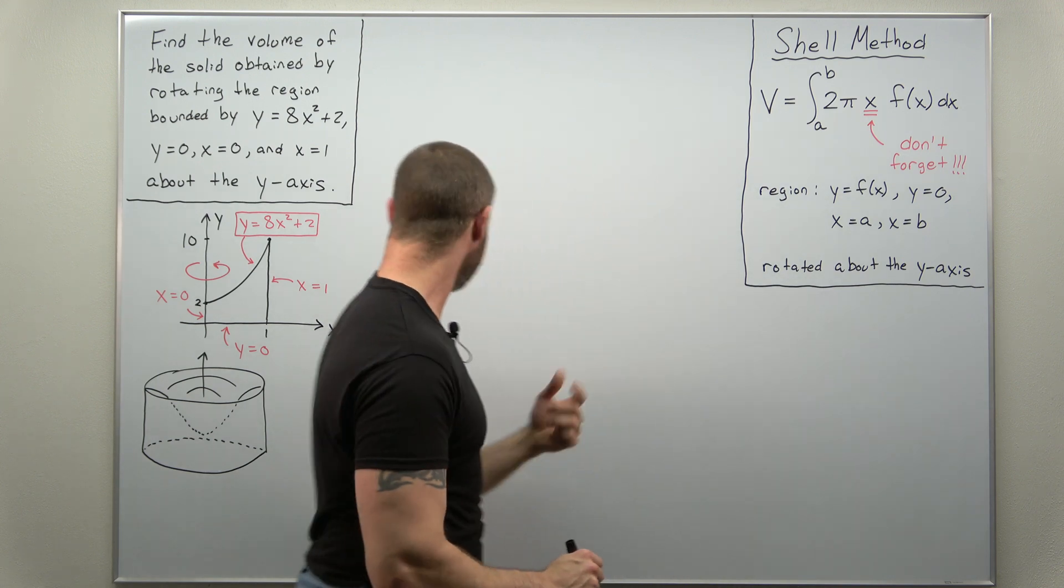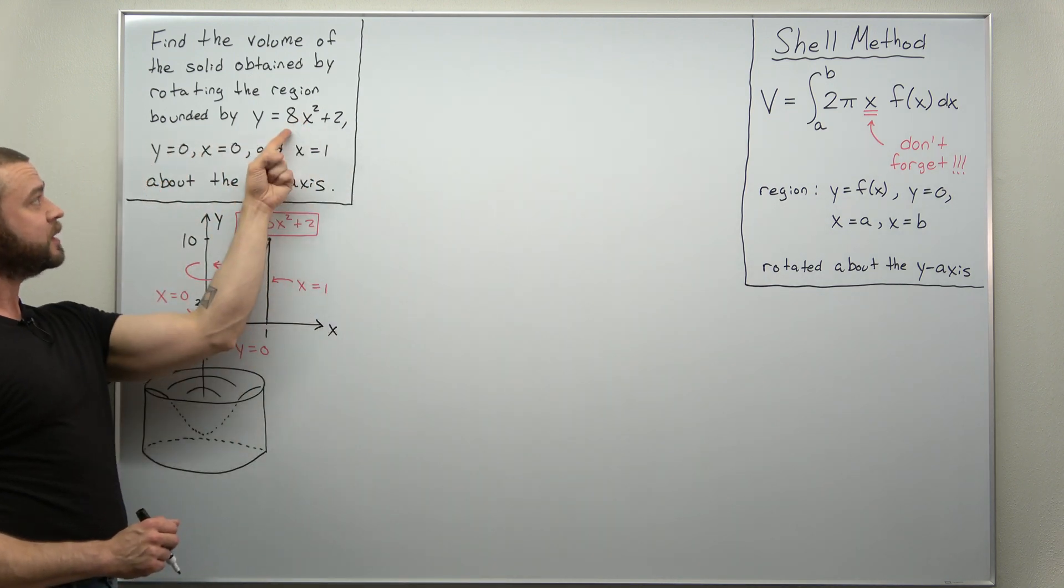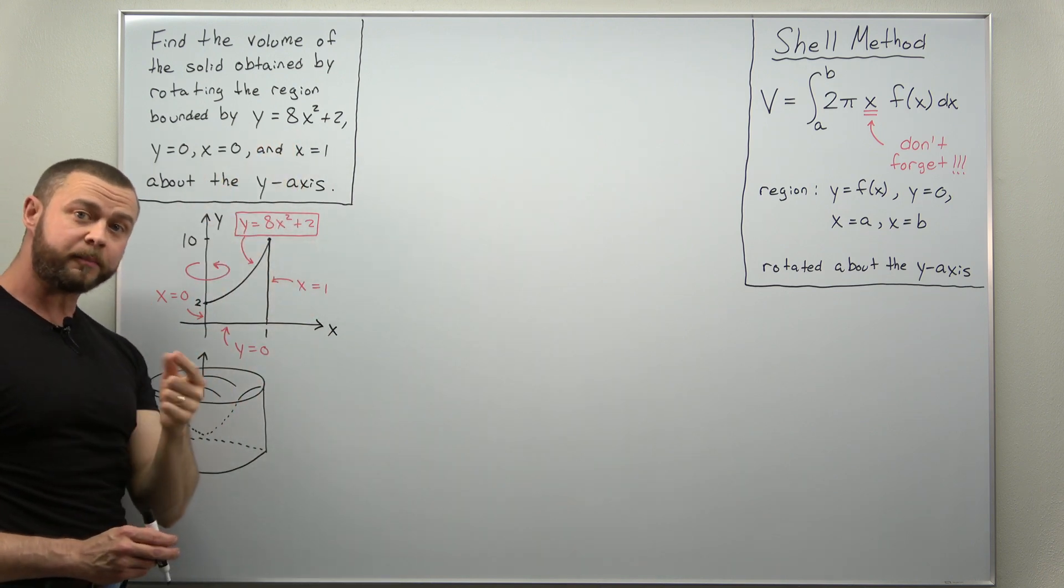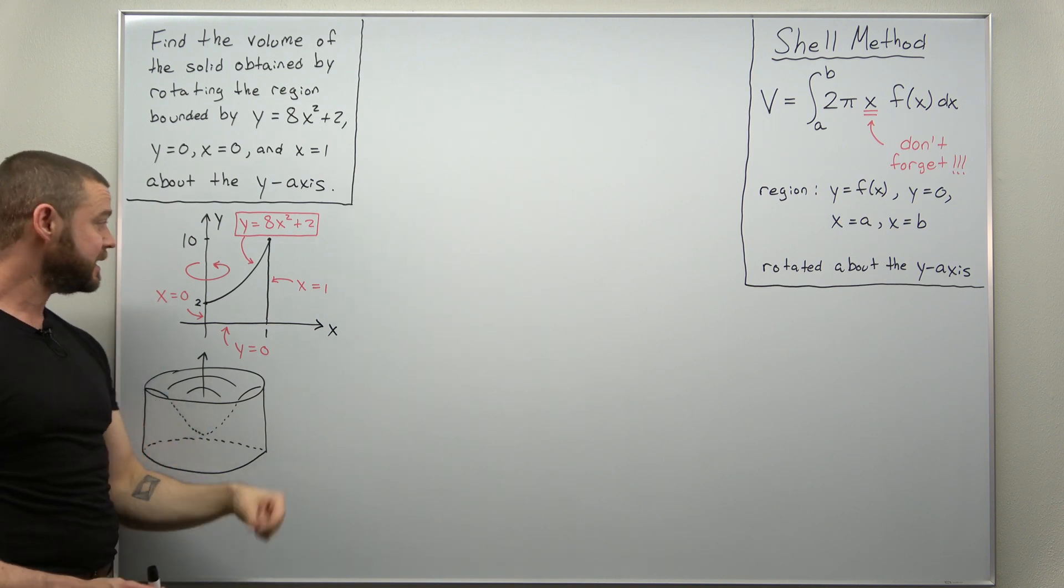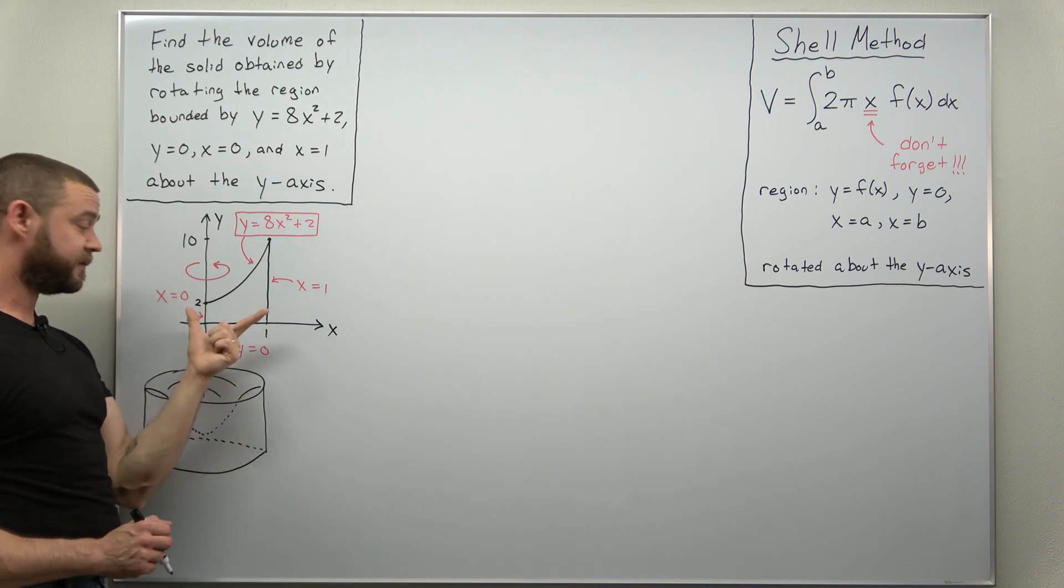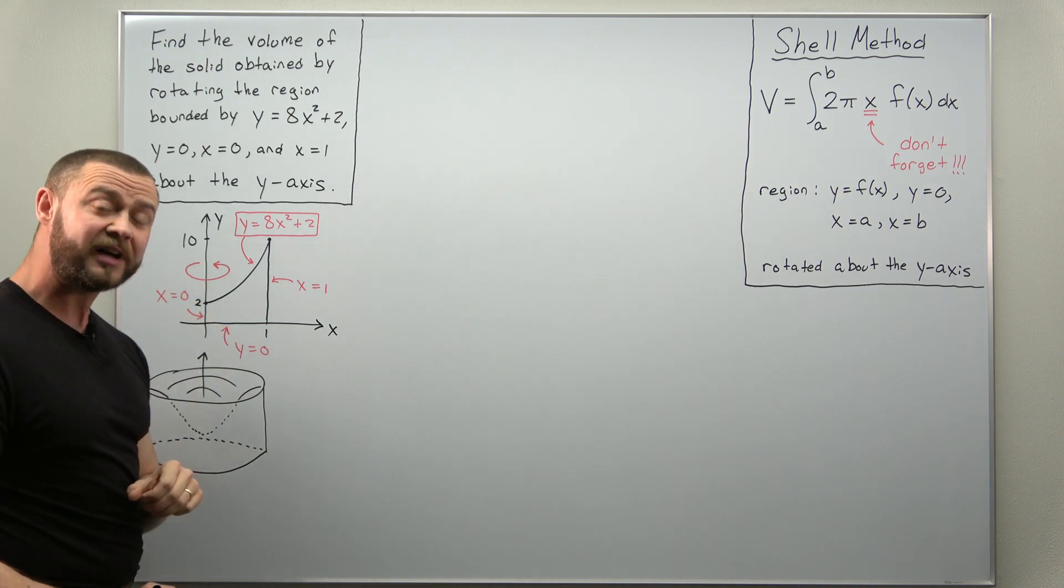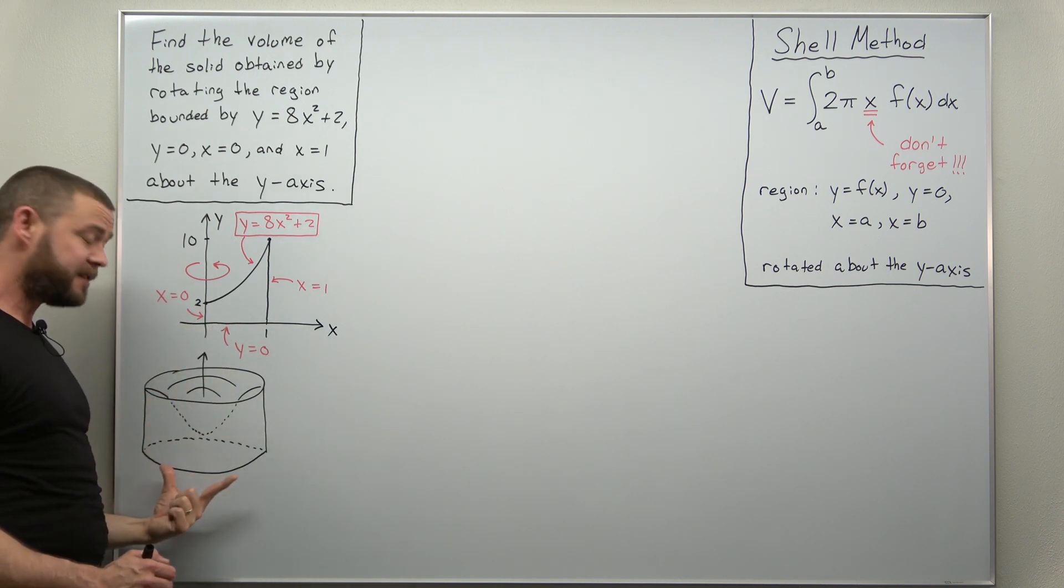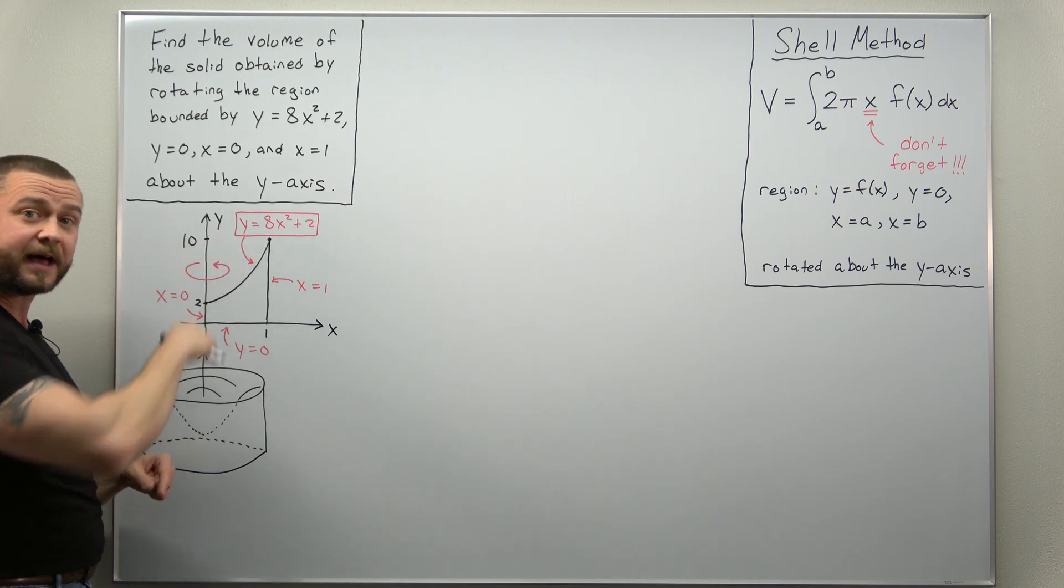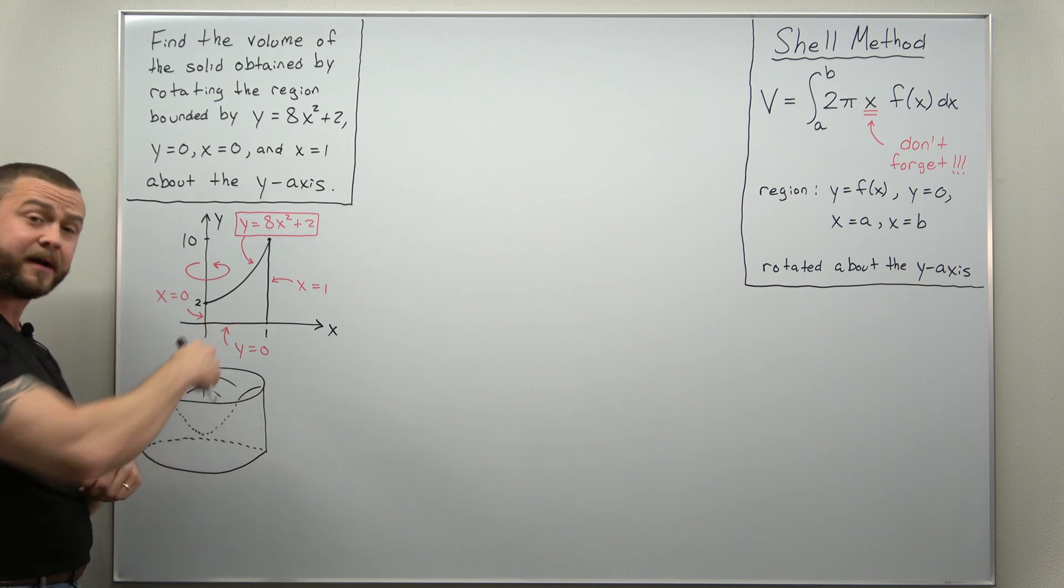Alright now with that in mind let's go to our problem here. We have a few curves given, the one of interest is the curve bounding the top of the region y equals 8x squared plus 2. And that's pretty much all we need to set up our volume integral to find the volume of this region where we rotate it about the y-axis. And it's always good as I tell my students to be able to sketch the region and visualize the solid. And you can see it's kind of scooped out or carved out in the middle there giving you this kind of carved out bowl if you rotate that about the y-axis.